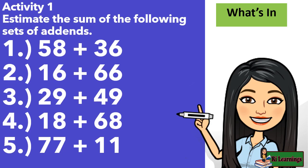Activity 1: Estimate the sum of the following sets of addends. 1. 58 plus 36, 2. 16 plus 66, 3. 29 plus 49, 4. 18 plus 68, 5. 77 plus 11.